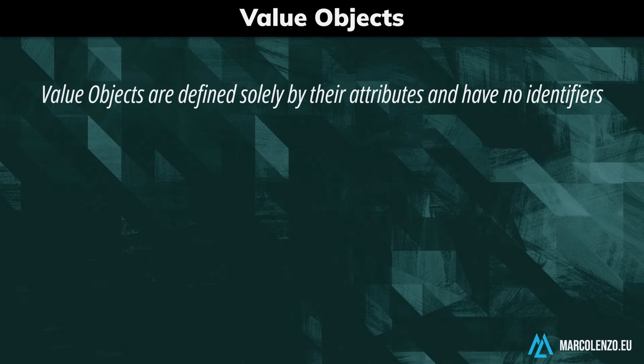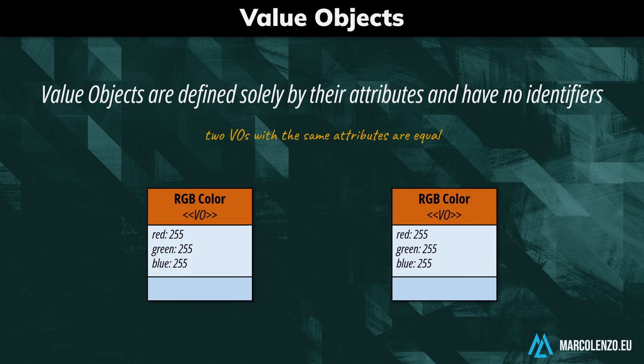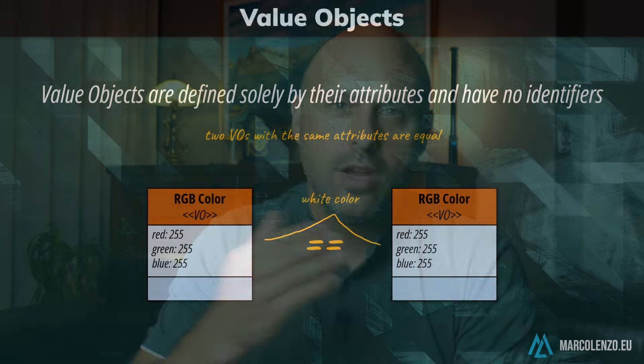Value objects are defined solely by their attributes and have no identifiers. Two value objects with the same attributes are considered equal and are conceptually the same. For example, the colour white is defined by its red, green, and blue values all being 255. No matter how many instances of this object exist, they all represent the very same colour.